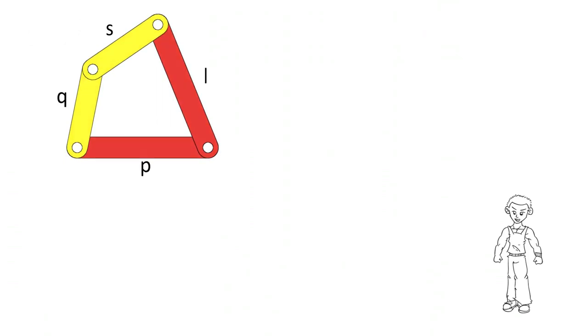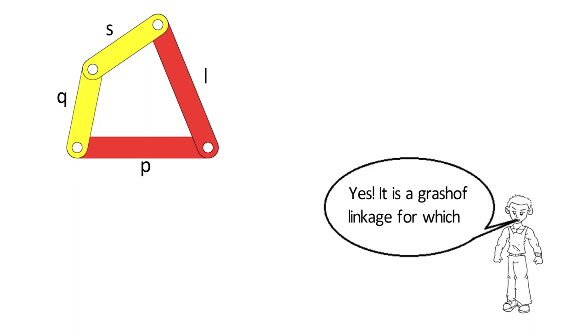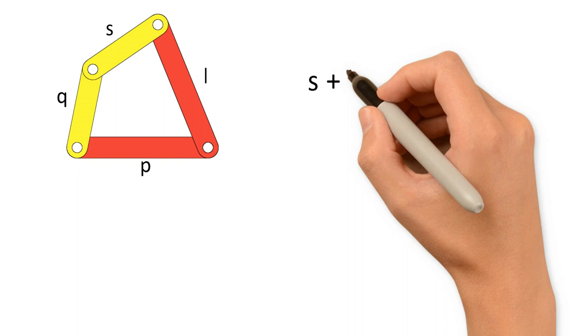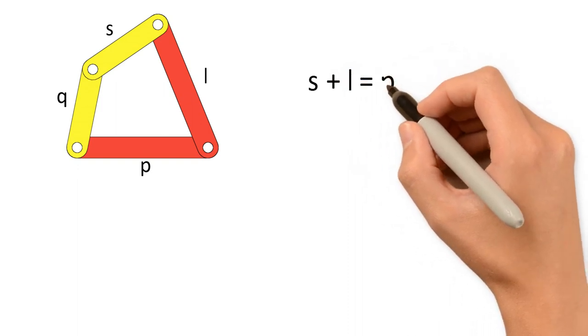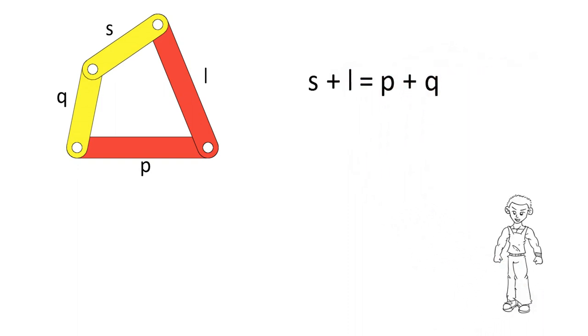Can you tell the relation between the length of the links for this linkage? Yes. It is a Grashof linkage for which the sum of the length of the shortest link and the largest link is equal to the sum of lengths of other two links. Correct.